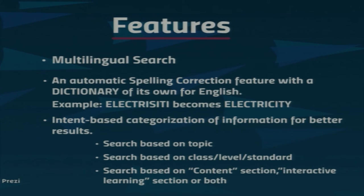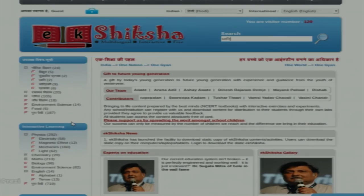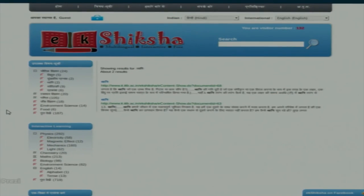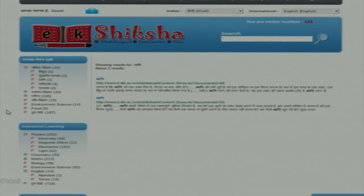The features of our search include: multilingual search, automatic spelling correction with its own dictionary, and intent-based categorization of information. Under intent-based categorization, we have search based on topic, search based on a specific level or standard, and search based on different sections — textual and interactive. For multilingual search, a user is not constrained to a particular language and can enter queries in a wide variety of supported languages. For example, the query 'Dhvani' is a Hindi term, and results include documents and videos containing that term.